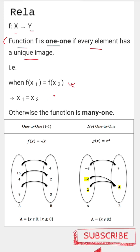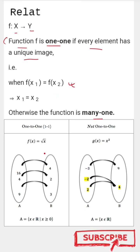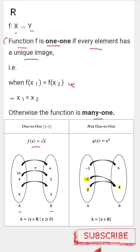Otherwise, if any function doesn't satisfy this particular parameter, then that particular function will be many-to-one. Our function is f of x equal to root x, and we can see the domain to be A and the codomain to be B. Here we can see that every element of the domain has a unique image in the codomain.